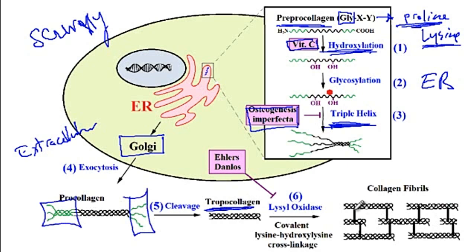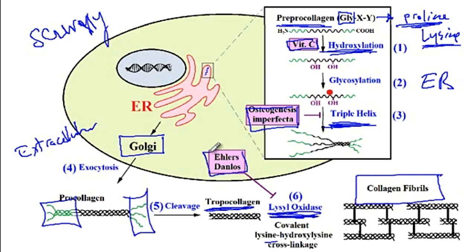The tropocollagen will then cross-link together to form the collagen fibrils. For the cross-linking of lysine and hydroxyl lysine, there is a lysyl oxidase enzyme. In patients with Ehler-Danlos syndrome, there is a problem with the lysyl oxidase step, where there won't be any covalent bond between lysine and hydroxyl lysine.